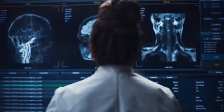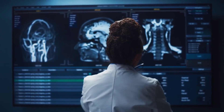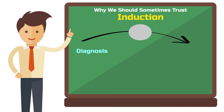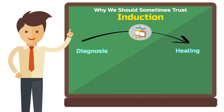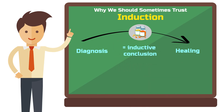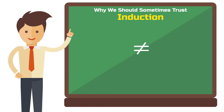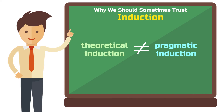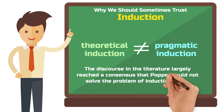Consider the context of medicine, for example. If we were to completely reject induction, both doctors and patients would face a significant problem. After diagnosing a disease, we choose a medication that has led to healing in thousands of past cases — we thus hope that the future will behave like the past, following an inductive conclusion. If we rejected induction as Popper originally intended, we would have to rely more on a medication that has never been tested. Therefore, there seems to be a difference between pragmatic and purely theoretical induction. Due to these complications, discourse in the philosophy of science largely reached a consensus that Popper could not solve the problem of induction.